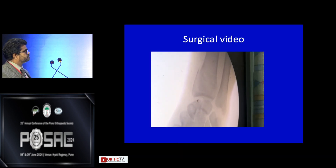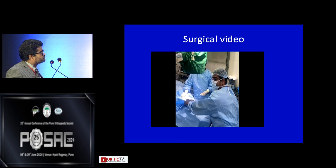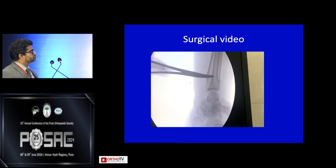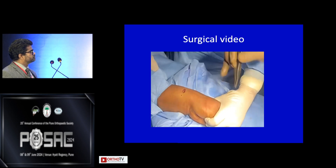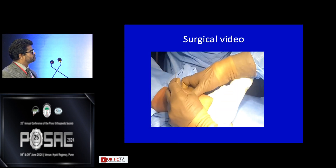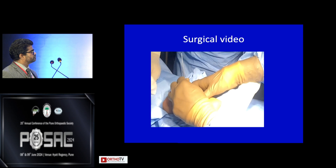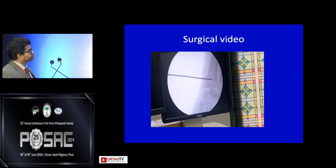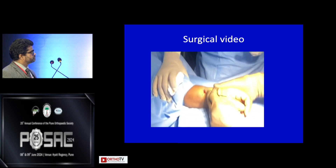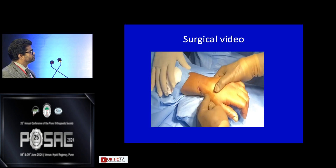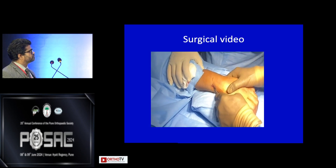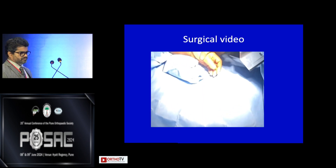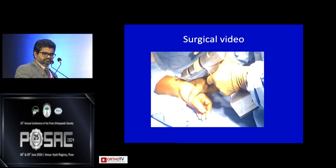We first screen the fracture under C-arm in AP view to see the fracture site, and then in lateral view. The first incision is made radially at the fracture site. We look at the fracture and pass the K-wire horizontally from the fracture site, then bend it to a 45-degree angle to reduce the radial tilt of the fracture. We then screen under the C-arm and drill the near cortex and far cortex, confirmed under C-arm.